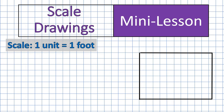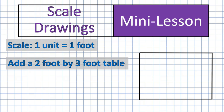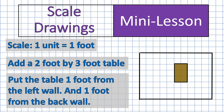Now, what we're going to do is take this room and make it a little bit more interesting. We're going to add a two foot by three foot table. There we go. Our table is two feet by three feet, a rectangular table. Now, I'm going to say, you know what? I want you to put that table one foot from the left wall and one foot from the back wall. Okay, let's move it over there.